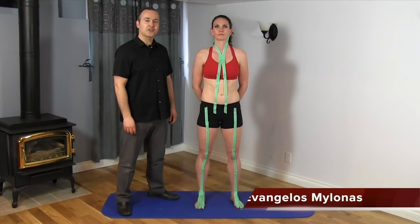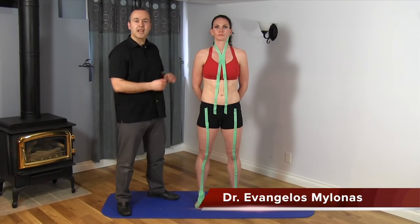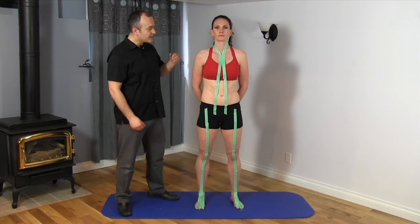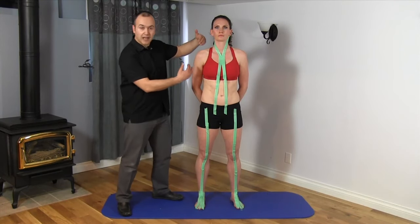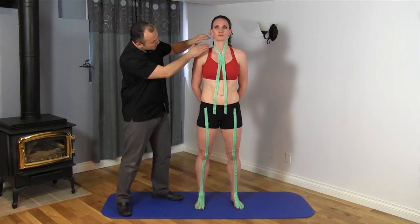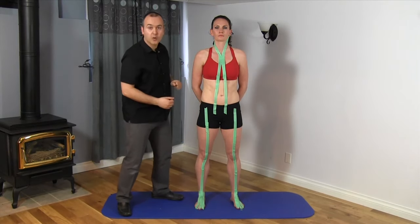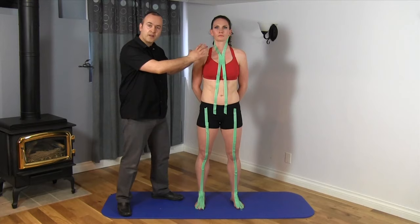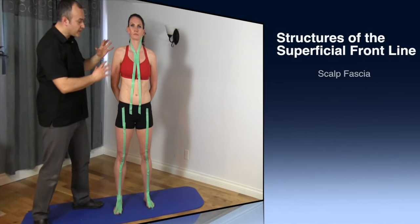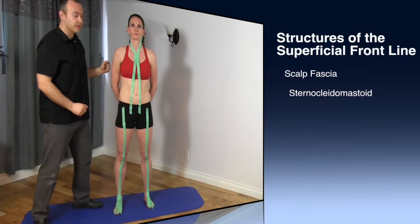Hello, Dr. Evangelos Mula Nass at Kinetic Health. Now that Brian's taped the superficial front line, you can see that there's a left and a right, consisting of two lines. We've got the two upper and the two lower, but this is one fascial plane — the superficial front line. Think of it as a continuous plane here on the front.